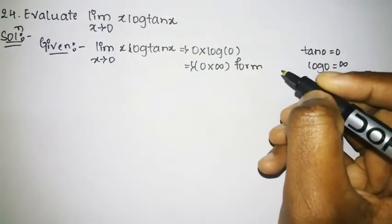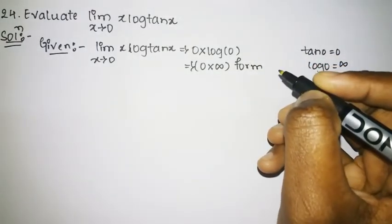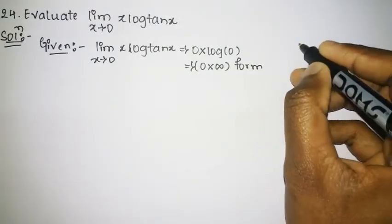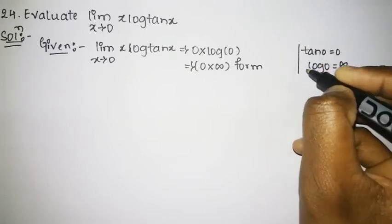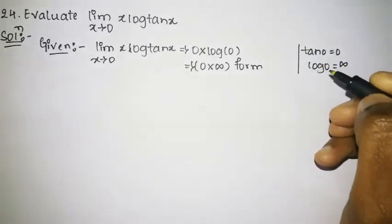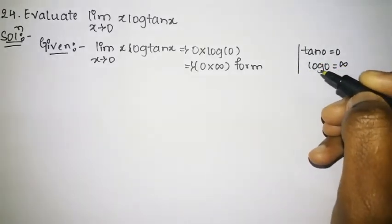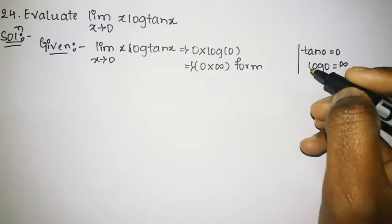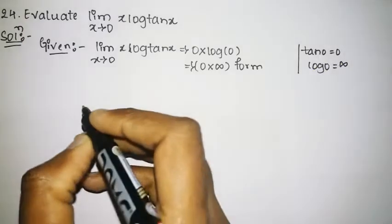Whenever there is a 0 cross infinity form, our first step is to convert it to either an infinity by infinity form or a 0 by 0 form, and then apply L'Hôpital's rule.